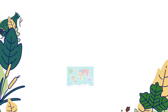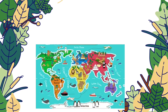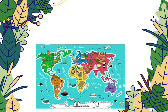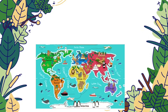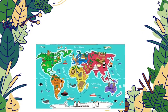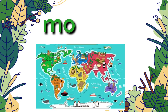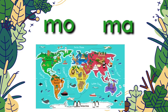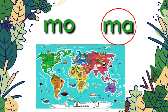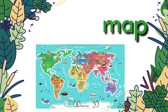Next, we have a map. This is a chart that shows the different features of a country or continent. What is the initial blend of the word map? Is it mo or ma? Correct — it's ma for map.